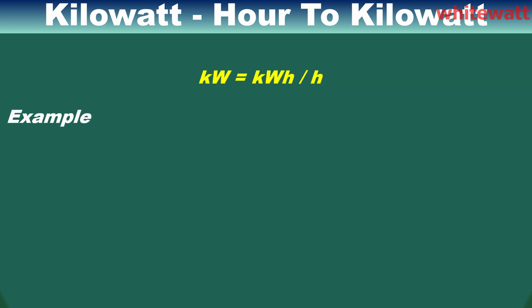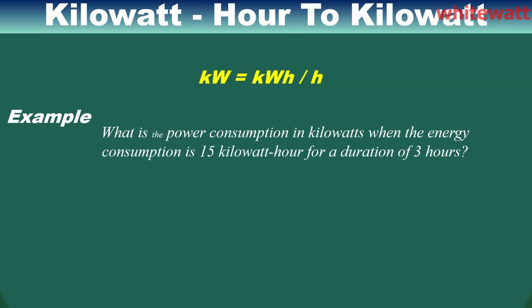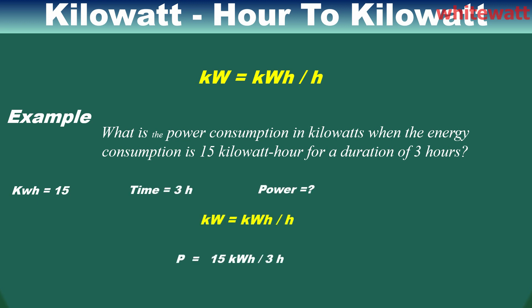For example: what is the power consumption in kilowatt when the energy consumption is 15 kilowatt hours for a time duration of three hours? Putting the values into the formula: Power = 15 kilowatt hours divided by 3 hours.